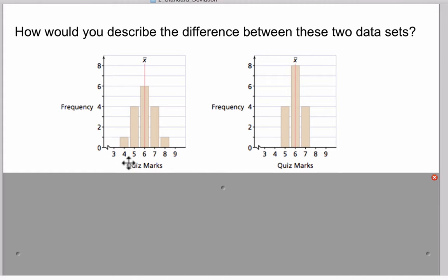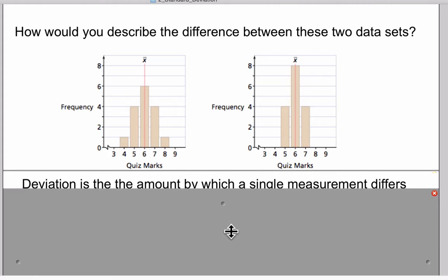They have identical means. The number of students that took the quiz—we have here a total of 16 marks and over here we have a total of 16 marks. So the difference between them: you'll notice that the low mark here is four and the high mark is eight, whereas the low mark here is five and the high mark here is seven.